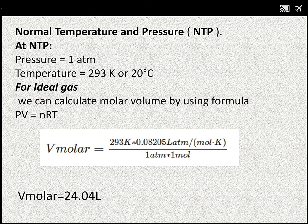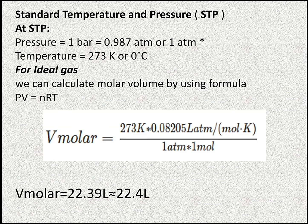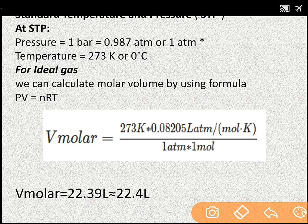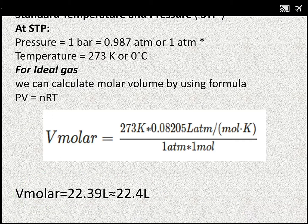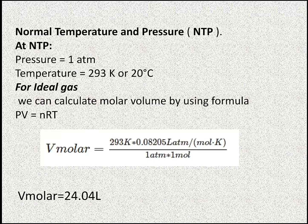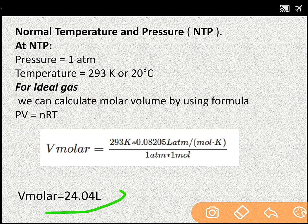So, the volume for an ideal gas at STP is 22.4 litre, and for NTP it will be 24.04 litre. Thank you.